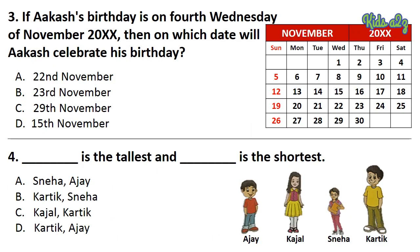Question 3: If Aakash's birthday is on the 4th Wednesday of November 2000-something, then on which date will Aakash celebrate his birthday? The answer is Option A — 22nd November. Question 4: Dash is the tallest and dash is the shortest. The answer is Option B — Karthik and Sneha.